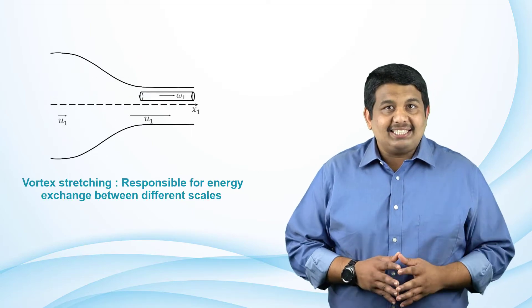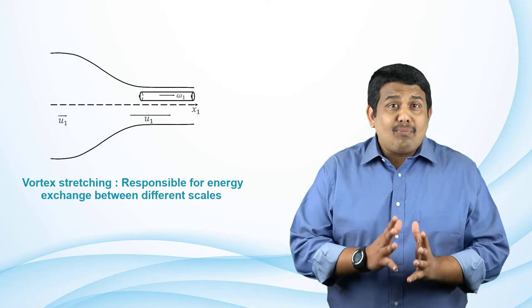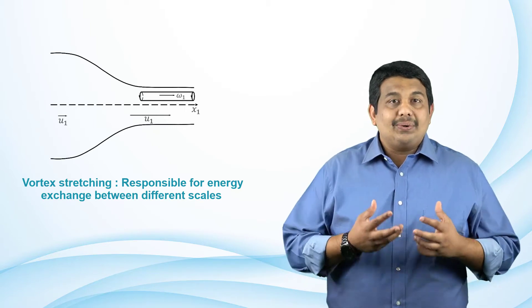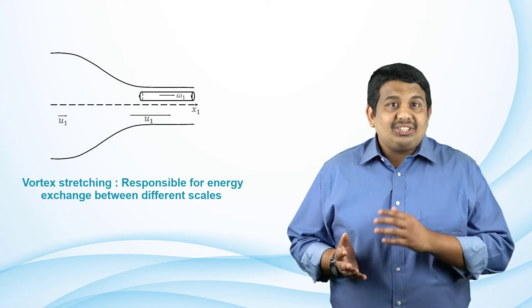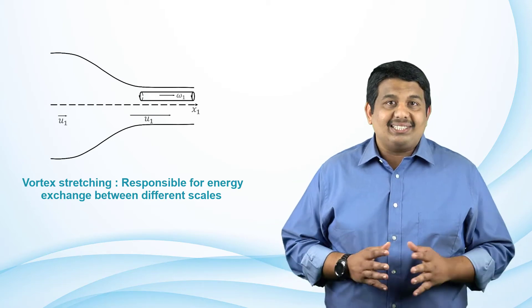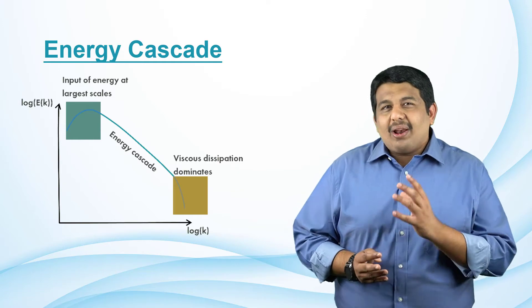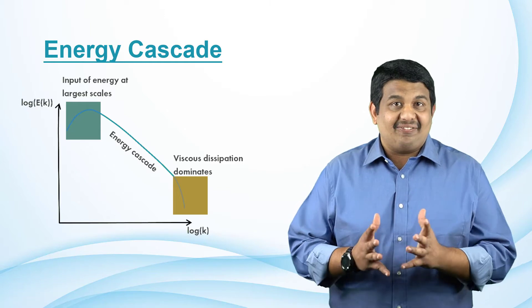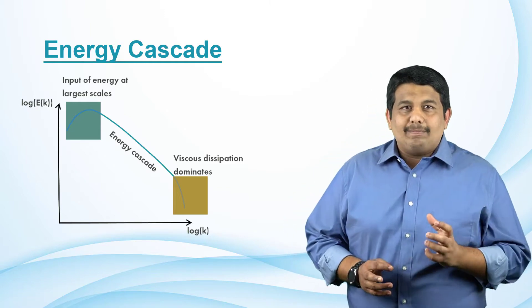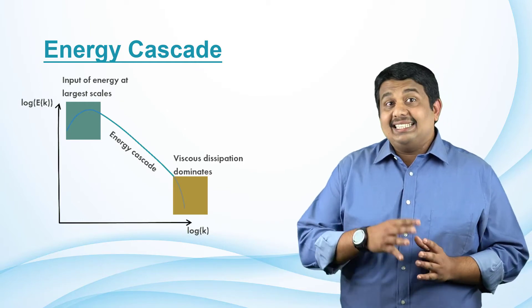These energy containing large scale eddies impose a straining effect on the smaller scales. Because of the vortex stretching mechanism, an exchange of energy takes place between the larger scales and the smaller scales, forcing the smaller structures to deform. This also increases their vorticity. The process of energy exchange between the large scales and the small scales is referred to as the energy cascade. This energy transfer process is central to the theory of turbulent flows. At really small scales, molecular viscosity takes over and decays the turbulent velocity fluctuations. This effectively stops the energy cascade and any remaining energy is then converted into heat.